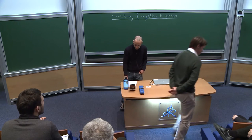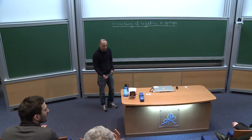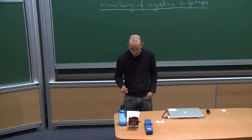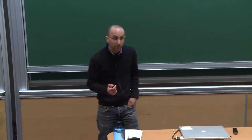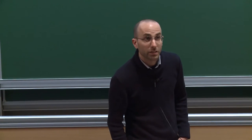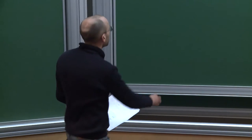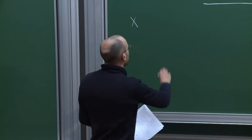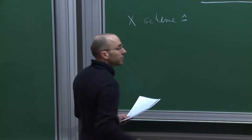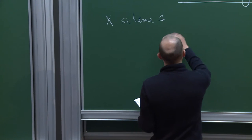Thank you very much for the invitation to speak here. I should make two preliminary remarks: first, the results I want to speak about today are not as complete as I would like, and second, most of them came around discussions with Matthew Morrow. In this talk, by a scheme X I always mean a scheme which is quasi-projective over a Noetherian ring of finite Krull dimension, for simplicity.